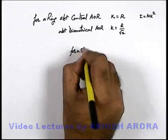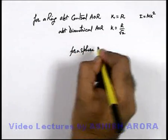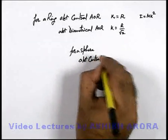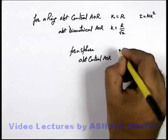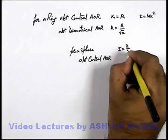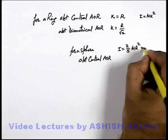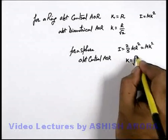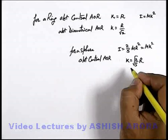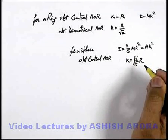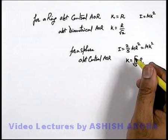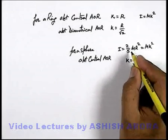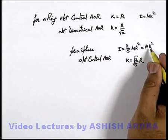Similarly, for a sphere about its central axis of rotation, we know the moment of inertia is (2/5)mr². So we equate this to mk², which gives us the radius of gyration as √(2/5) · r. In this manner we can find the moment of inertia of any given object if its radius of gyration is known, or similarly, if the moment of inertia is known we can find its radius of gyration.